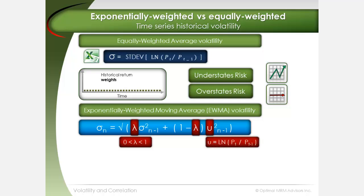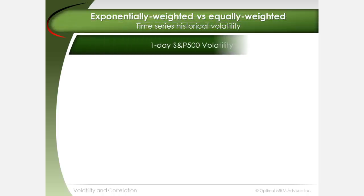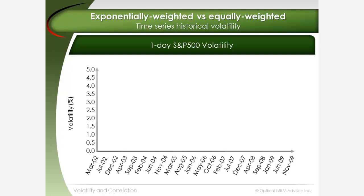EWMA applies exponentially decreasing weights as the series moves back in time. Based on consecutive two-year historical windows over an eight-year period from 2002, we can compare the historical volatility of the S&P 500 index calculated using the standard deviation method versus the EWMA method.